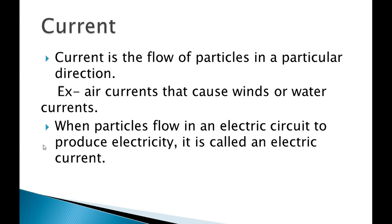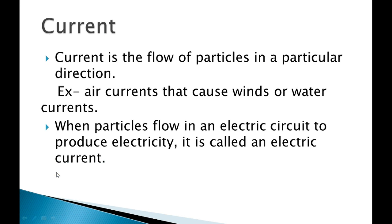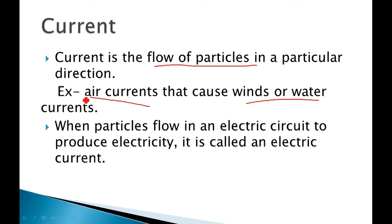So we will start our topic: what is current? Current basically is the flow of particles in a particular direction, so that electricity is produced. For example, like air current — when wind flows in a particular direction, air speed changes. In the same way, when particles flow in an electric circuit path, it produces electricity, and it is called electric current.